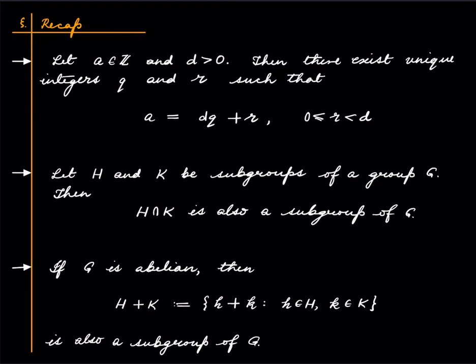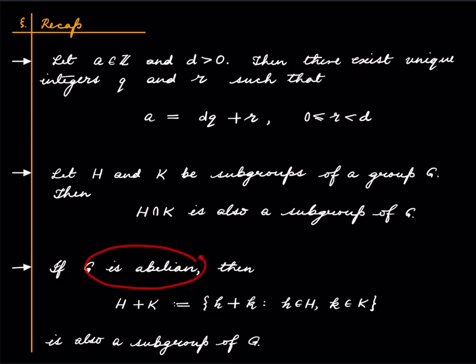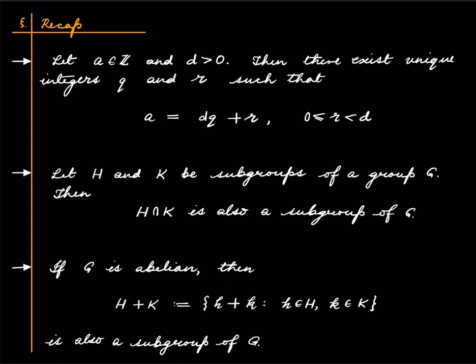We also saw in the last lecture that if we have two subgroups of a group G, then their intersection is also a subgroup. We also saw that if G is an abelian group, then H + K — where you pick an element from H and an element from K and apply the group operation — is also a subgroup of G. For abelian groups we typically write plus to denote the group operation.